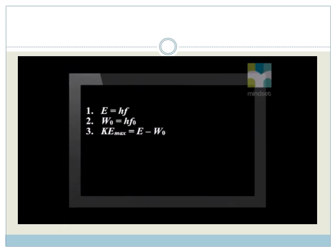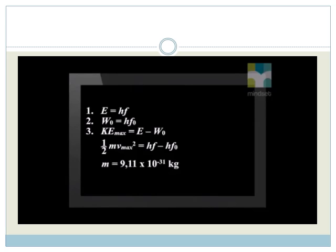KEmax equals the energy the photon gave the electron, E, minus the metal's work function, W0. Or more fully: half MVmax squared equals HF minus HF0. M is the mass of an electron, which is 9.11 times 10 to the power minus 31 kilograms. Vmax is the maximum magnitude of the velocity of the emitted electrons.